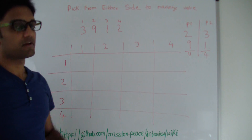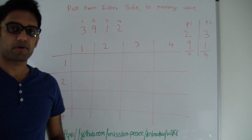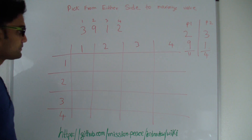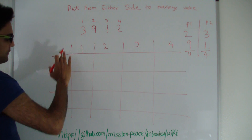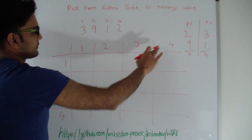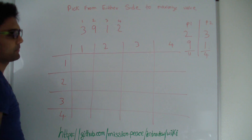So how do we solve this problem? We'll use dynamic programming to solve this problem. Here we have 4 rows and 4 columns because we have 4 total numbers.